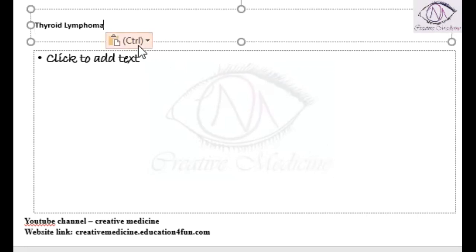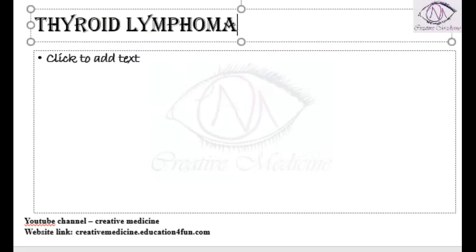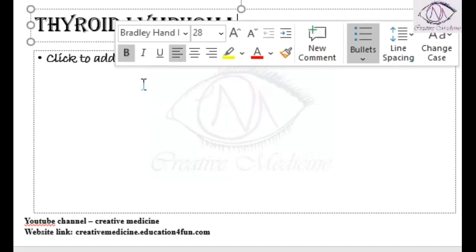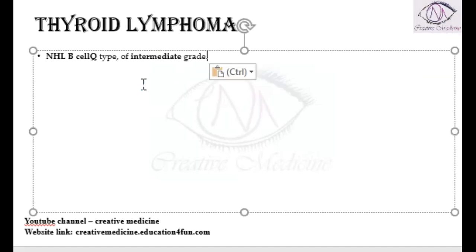The most common type of thyroid lymphoma is non-Hodgkin B cell type of lymphoma, which is of intermediate grade.